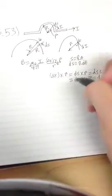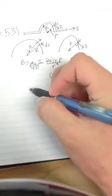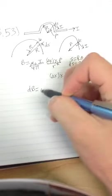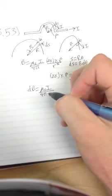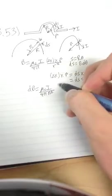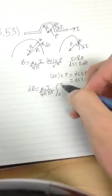So we're going to integrate. We'll write db equals mu naught i over 4 pi r squared, integrated from 0 to pi.